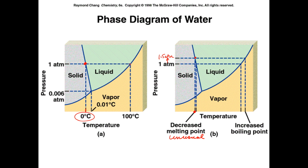To read the boiling point at one atmosphere, we come over and hit the phase boundary between the liquid and the vapor, because that is the transition between the liquid and vapor phase where boiling happens. Coming down and reading on the graph, we see that water boils at 100 degrees Celsius.